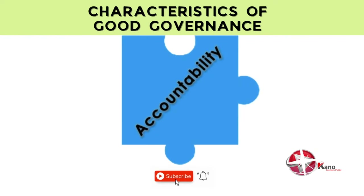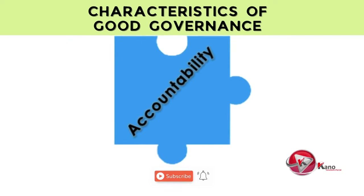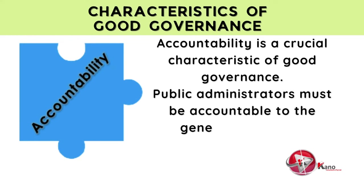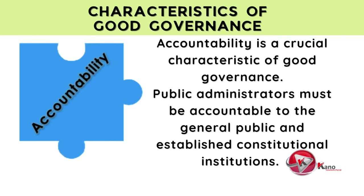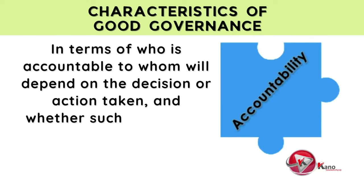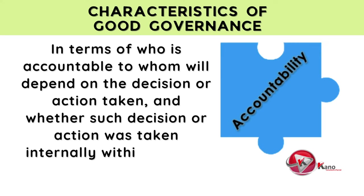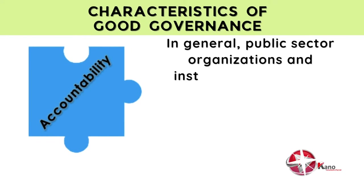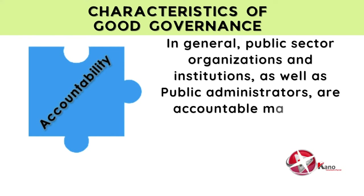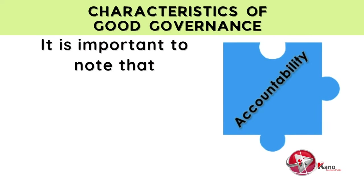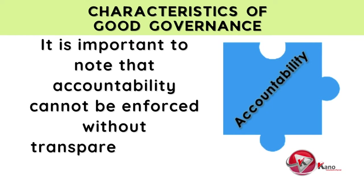The last but certainly not least characteristic of good governance we will discuss is accountability. Accountability is a crucial characteristic of good governance. Public administrators must be accountable to the general public and established constitutional institutions. Who is accountable to whom will depend on the decision or action taken, and whether such decision or action was taken internally within a public institution or externally. In general, public sector organizations and public administrators are accountable mainly to those who are affected by their decisions or actions. It is important to note that accountability cannot be enforced without transparency and the rule of law.